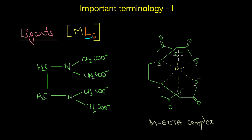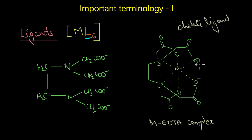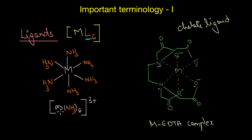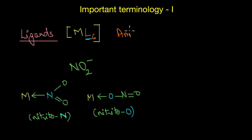When a bidentate or polydentate ligand uses its two or more donor atoms to bind with the central metal atom simultaneously, it is called a chelate ligand, and such complexes are called chelate complexes. Because of the structural integrity, chelate ligands produce much more stable complexes than similar complexes with monodentate ligands. For example, the metal-EDTA complex would be much more stable than the metal-ammonia complex because of the stability offered by the chelation effect.